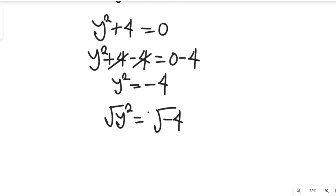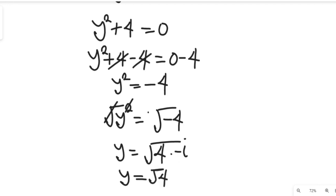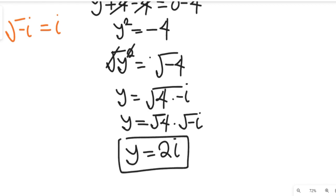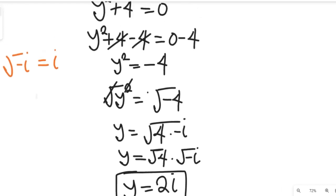Since negative 4 is a negative number, we can write the square root of negative 4 as the square root of 4 multiplied by the square root of negative 1. From complex number theory, the square root of negative 1 equals j (the imaginary unit), so the solution is y equal to 2j.